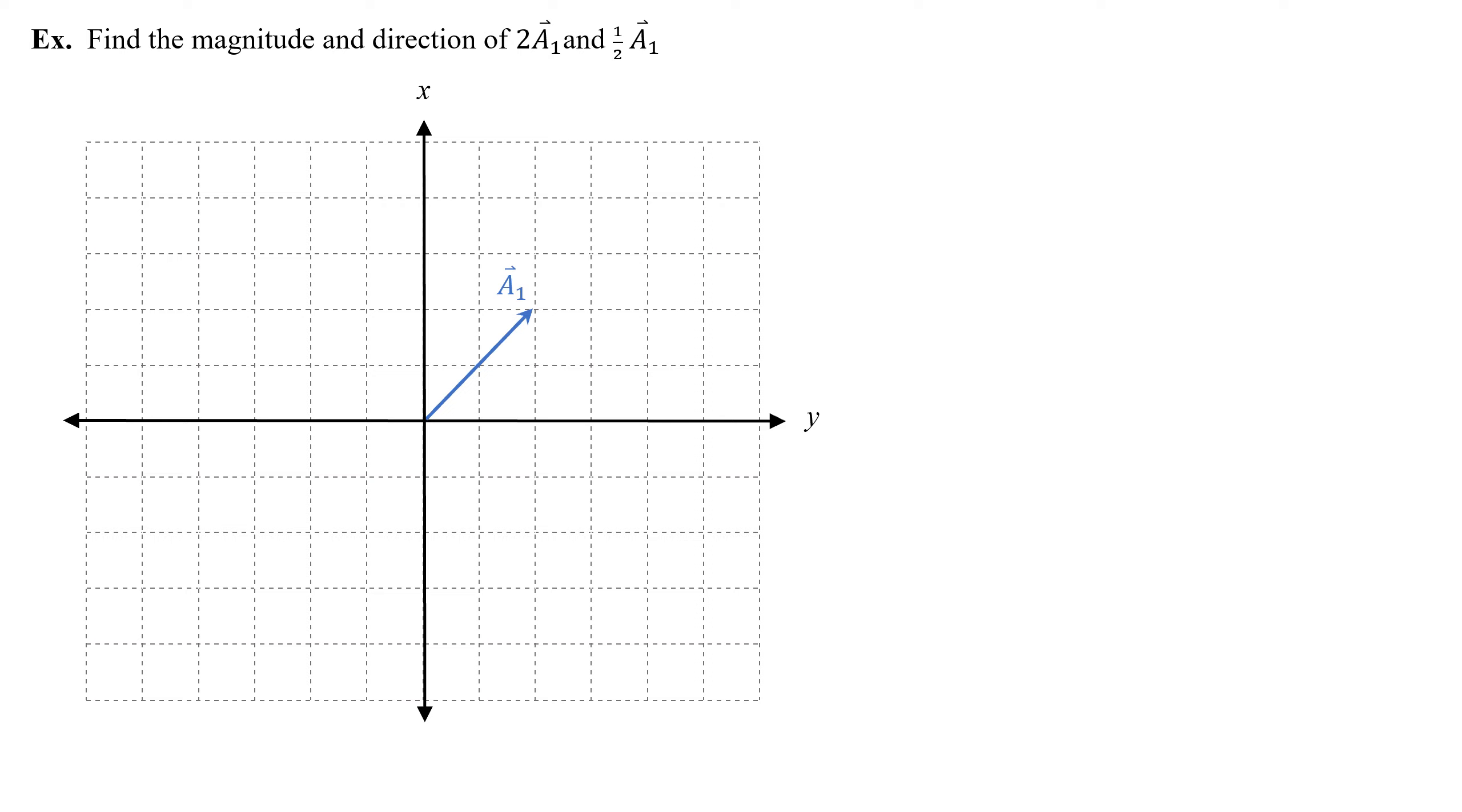Find the magnitude and direction of 2a1 and half of a1. Let's start by finding the magnitude and direction of a1. And we'll write it in this form where we find the magnitude, comma, the direction. The angle should be pretty obvious. It's just 45 degrees.